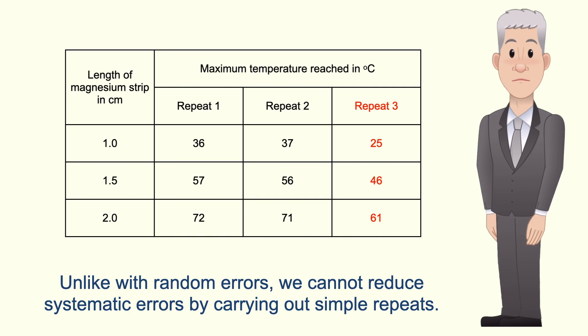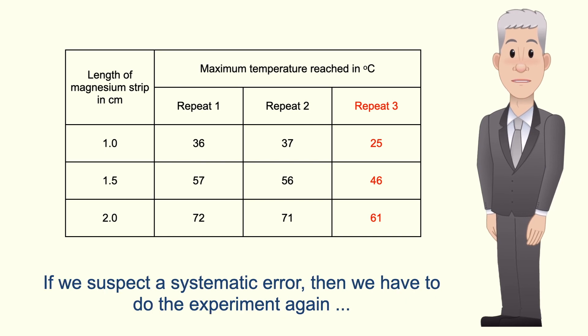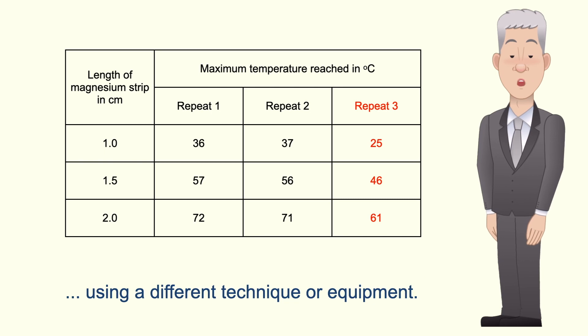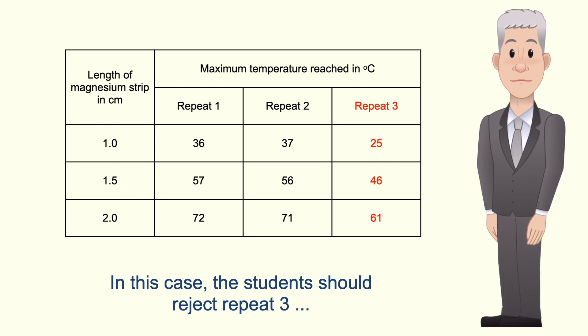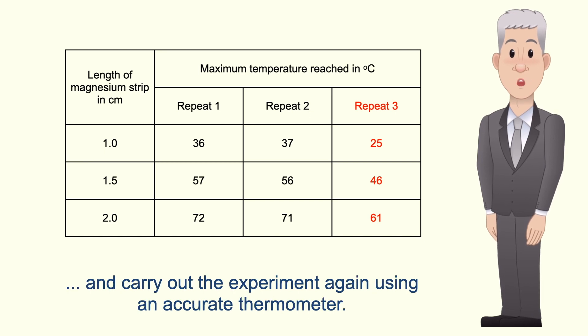Now unlike with random errors, we cannot reduce systematic errors by carrying out simple repeats. If we suspect a systematic error then we have to do the experiment again using a different technique or equipment. We can then compare our findings with the original results to see if a systematic error had occurred. In this case, the students should reject repeat 3 and carry out the experiment again using an accurate thermometer.